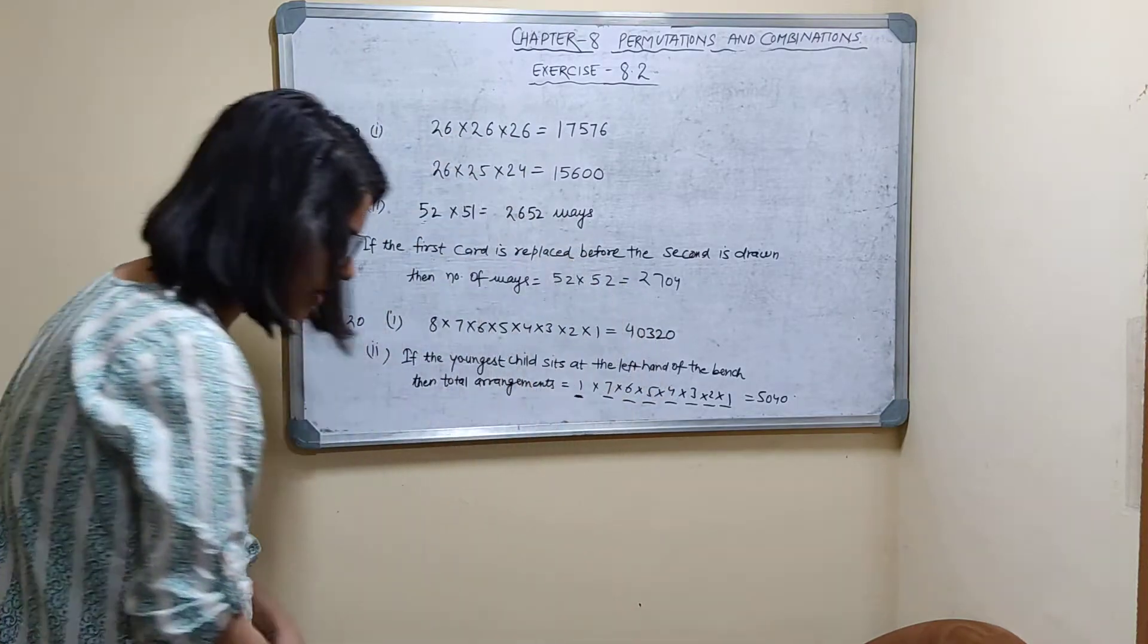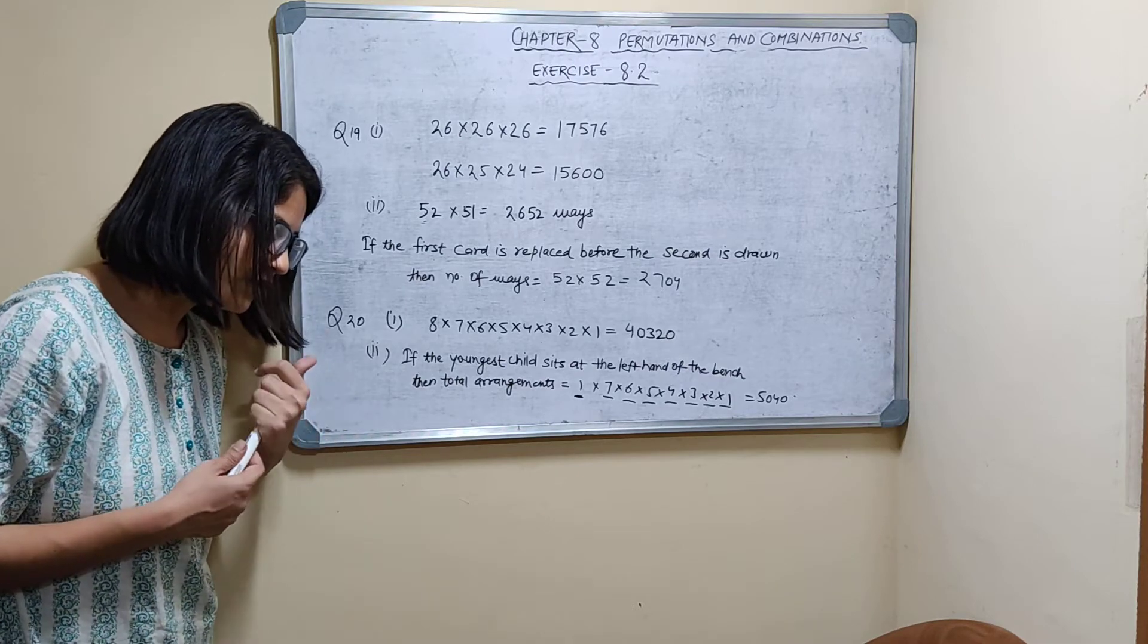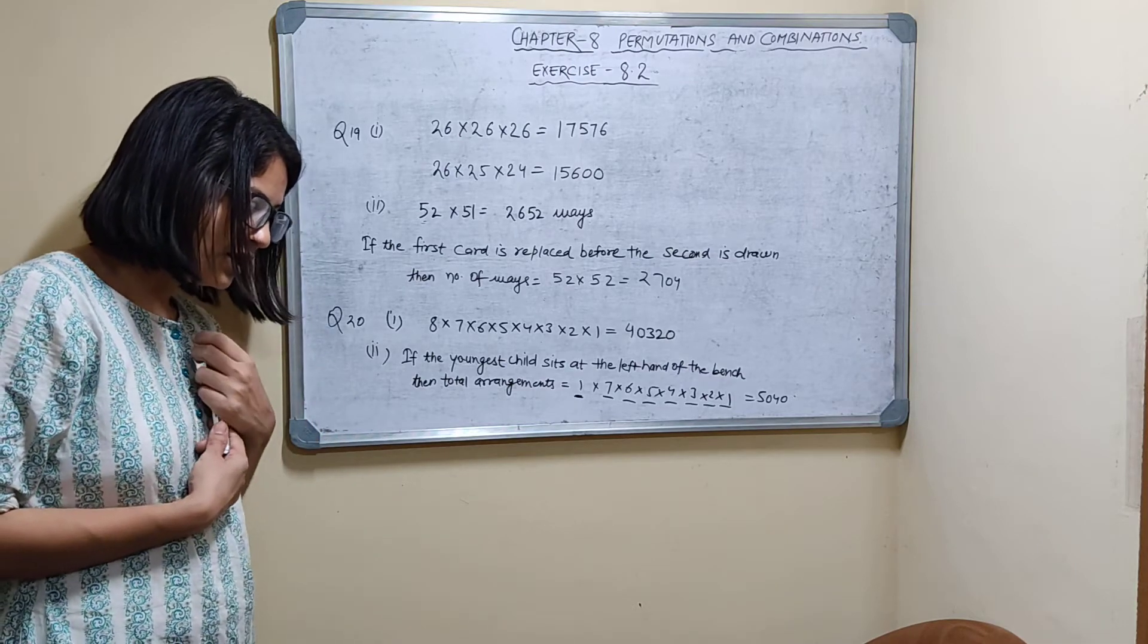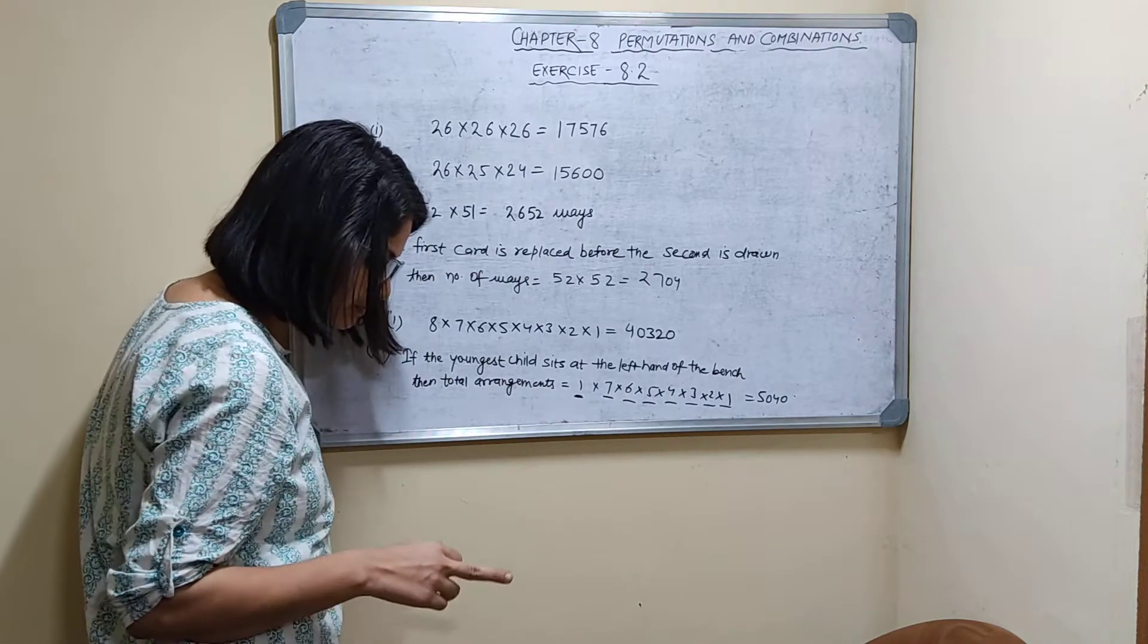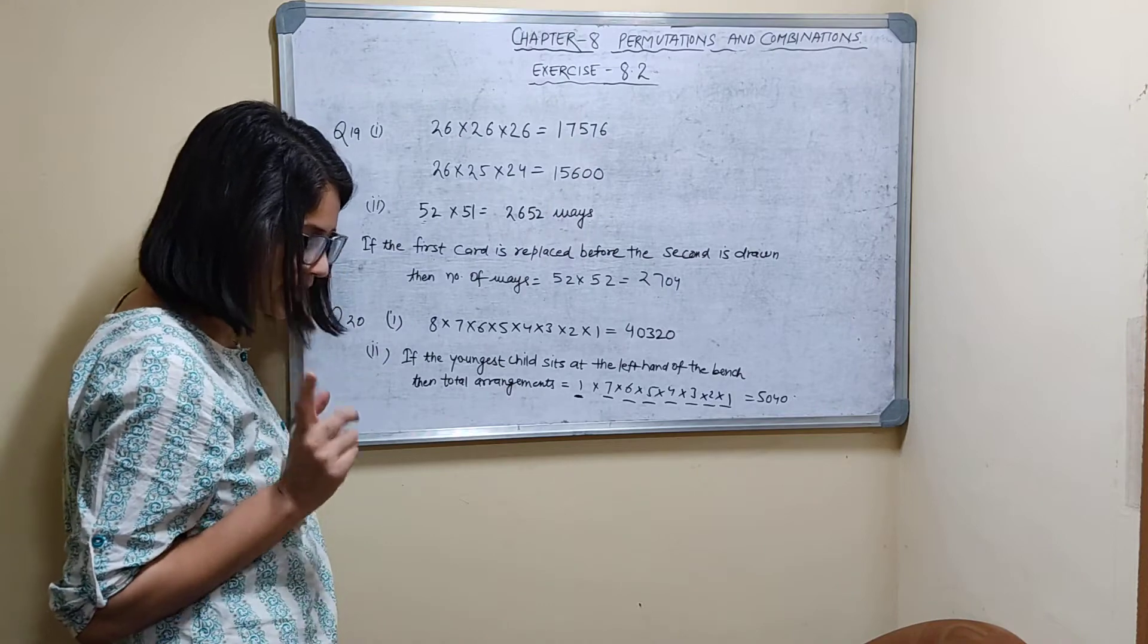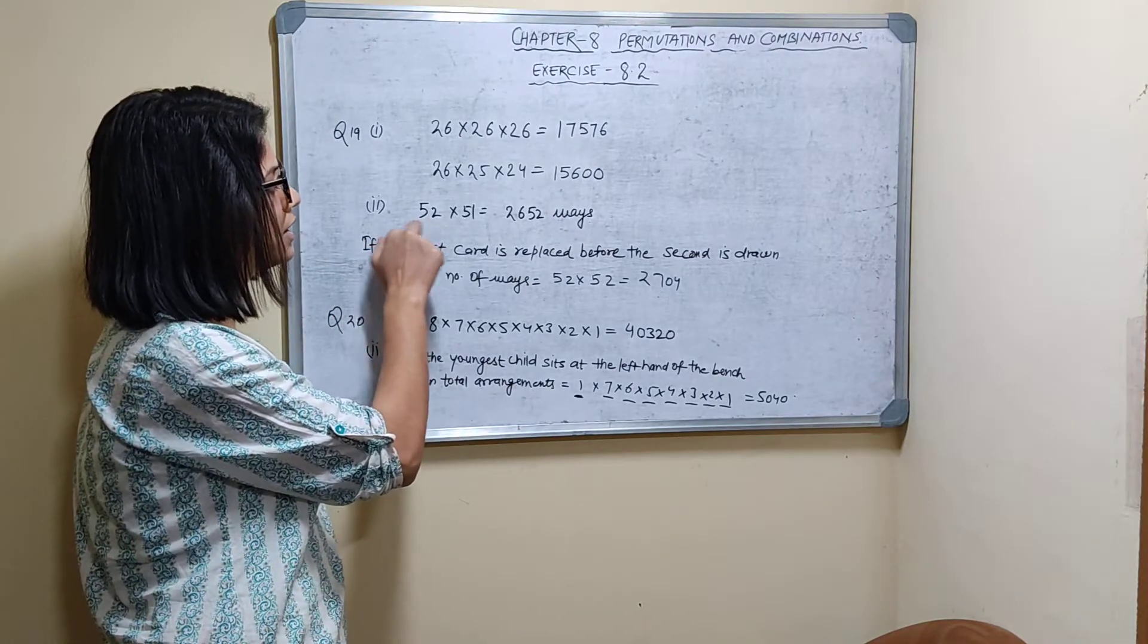Part 2nd you can see. Two cards are drawn one at a time and without replacement from a deck of 52 cards. Determine the number of ways in which cards can be drawn. What is given? Two cards are drawn one at a time and without replacement. So how many cards are there? 52.